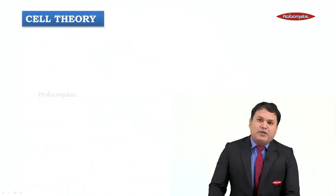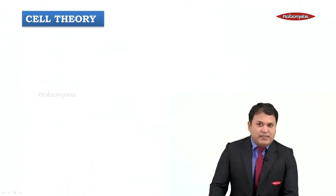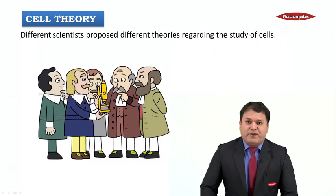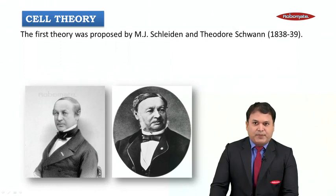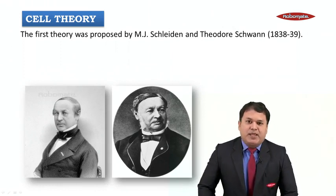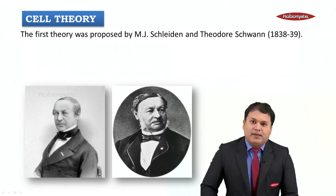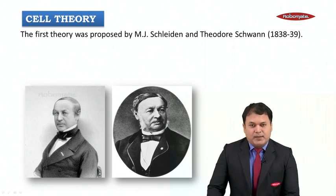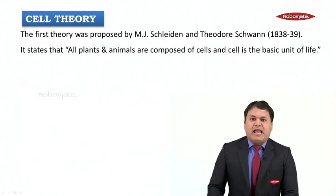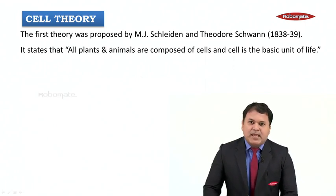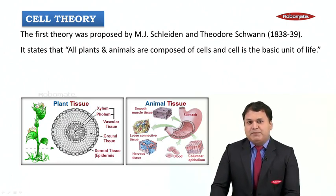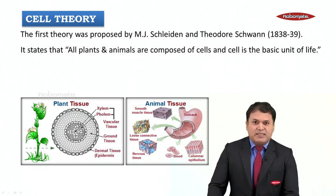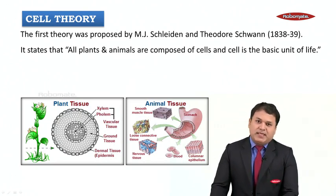Now let us try to understand cell theory. Different scientists proposed different theories regarding the study of cells, which we call cell theory. The first theory was proposed by M.J. Schleiden and Theodore Schwann in the years 1838 and 1839. They proposed that all plants and animals are composed of cells, and that the cell is the basic unit of life.